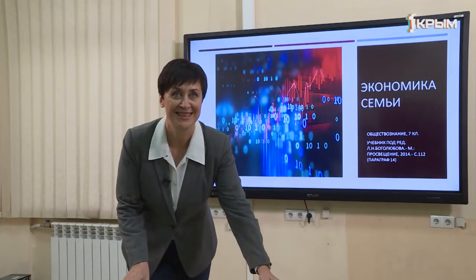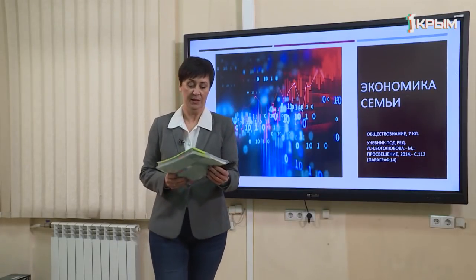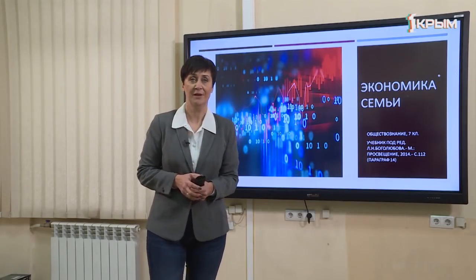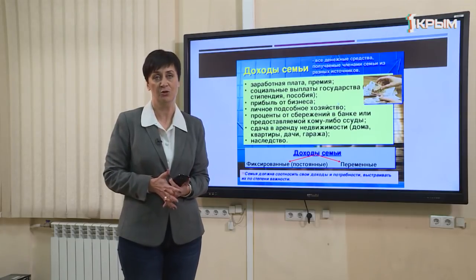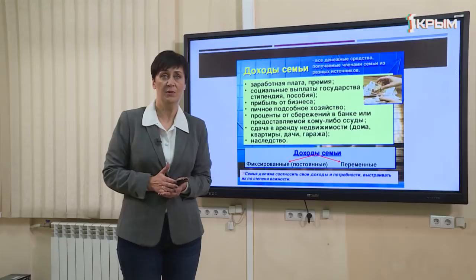Здравствуйте, дорогие семиклассники! Мы начинаем наш урок обществознания в 7 классе. Мы работаем сегодня по учебнику под редакцией Боголюбова, параграф 14, и тема нашего урока очень актуальна — экономика семьи. Основные понятия, которые мы рассмотрим: имущество семьи, доходы семьи, расходы, виды доходов и расходов, и семейный бюджет. Также будет небольшая практическая часть.